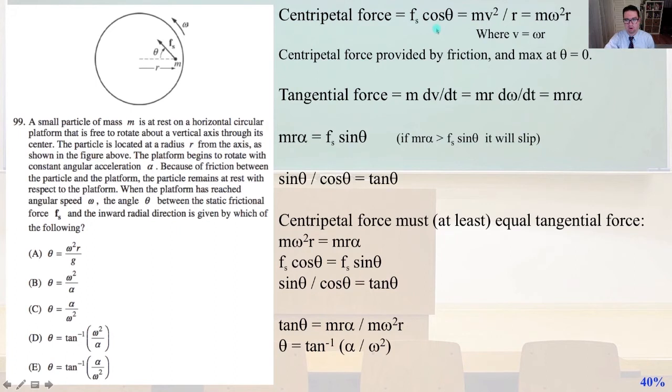So the centripetal force, F_s, cosine theta, equals mv squared over r equals mω²r, where v equals ωr, w being omega. So the centripetal force provided by friction and max at theta equals 0. So the tangential force equals m dv/dt equals mr dω/dt equals mrα. So mrα equals F_s sine theta, and if mrα is greater than F_s sine theta, it's going to slip.